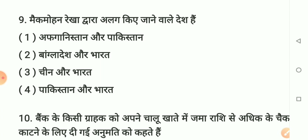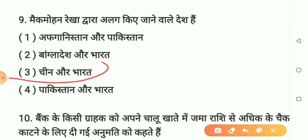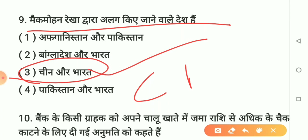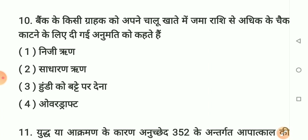Question number 9: McMahon Rekha dwara alag kiye jaane wale desh kaun hain? Option 1 - Afghanistan aur Pakistan. Option 2 - Bangladesh aur Bharat. Option 3 - China aur Bharat. Option 4 - Pakistan aur Bharat. Sahi answer hai option 3: China aur Bharat. McMahon Rekha dwara alag kiye jaane wale desh China aur Bharat hain. Yaad rakhiye.